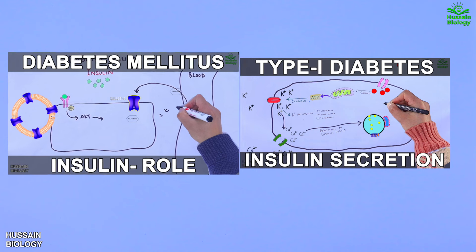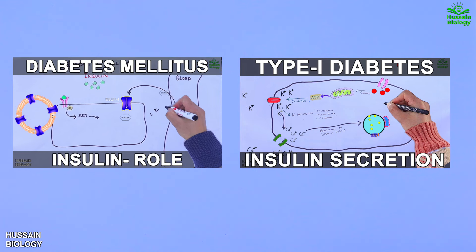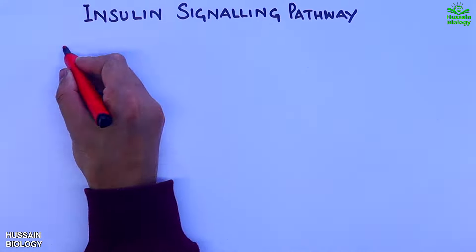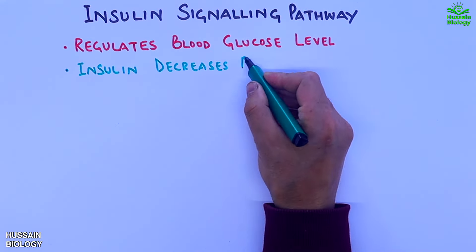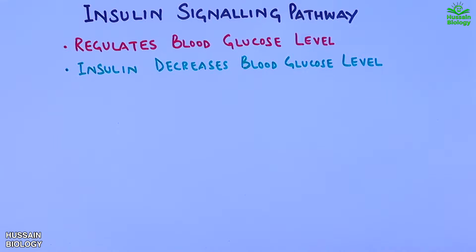In the previous video we discussed diabetes mellitus and its types. If you want to watch that video first, the link is in the description. Now in this video we'll be discussing the insulin signaling pathway. This pathway regulates blood glucose levels, and we know insulin decreases blood glucose levels.